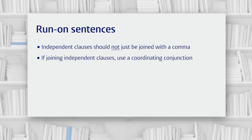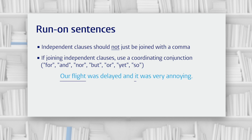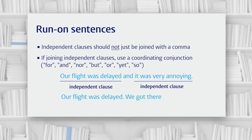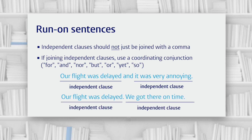The coordinating conjunctions in English are: for, and, nor, but, or, yet, and so. For example, we can take our two independent clauses — 'our flight was delayed' and 'it was very annoying' — and join them together with 'and.' Another example: two independent clauses. If we want to join them together, we can't just use a comma, but we can use the coordinating conjunction 'but.' And another example of joining two independent clauses, this time with the coordinating conjunction 'so.'